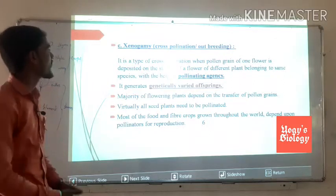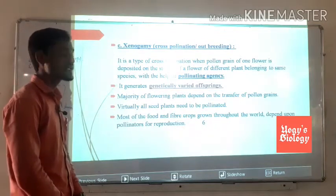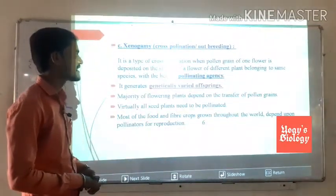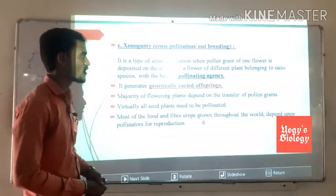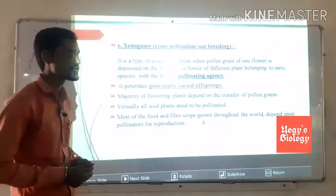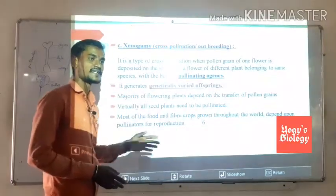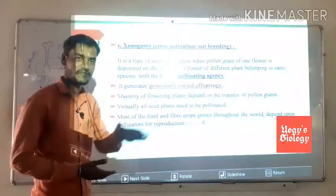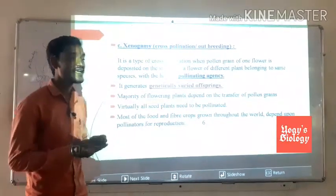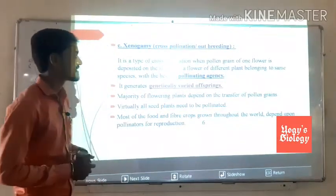The next type is xenogamy — cross-pollination or outbreeding. It is the type of cross-pollination when pollen grains of one flower are deposited on the stigma of a flower of a different plant belonging to the same species, with the help of a pollinating agency. This process generates genetically varied offspring.